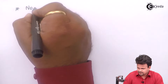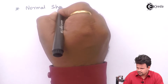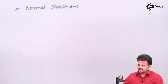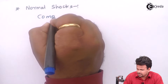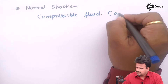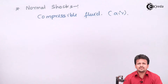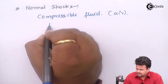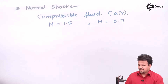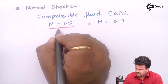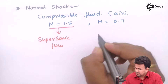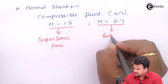What is normal shock? Normal shocks occur in a fluid which is compressible. The first criteria for normal shocks is that we should have a compressible fluid such as air. This air may travel with Mach number M equal to 1.5 or M equal to 0.7. When the Mach number is 1.5, the flow is specified as supersonic flow, whereas when Mach number is 0.7 it is a subsonic flow.